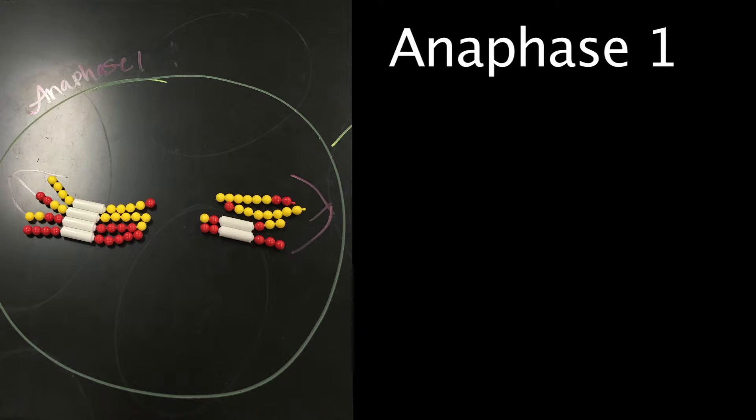Anaphase 1 is when the tetrads separate and are drawn to opposite poles by the spindle fibers. The centromeres in anaphase 1 remain intact.